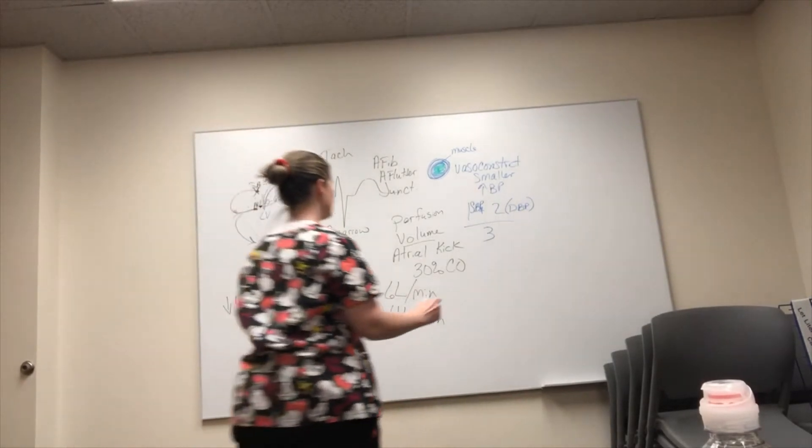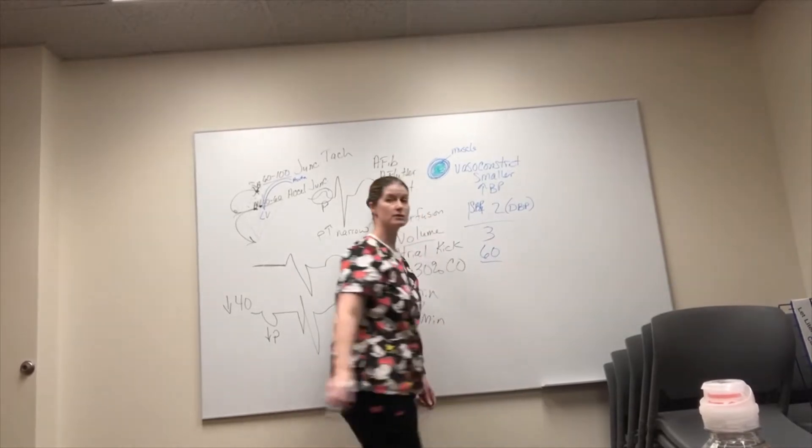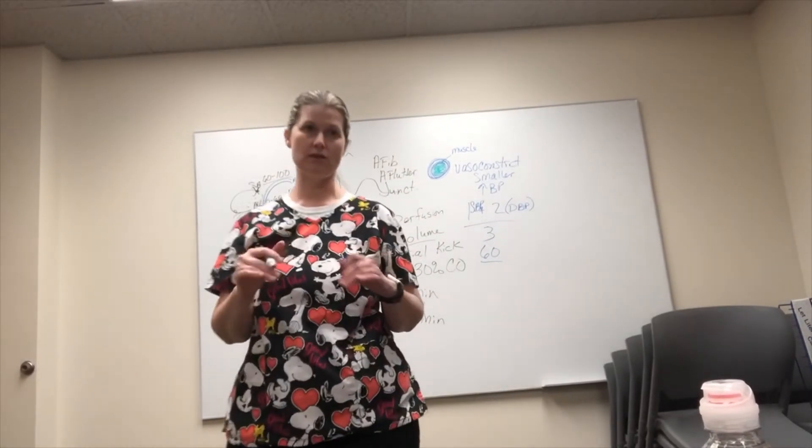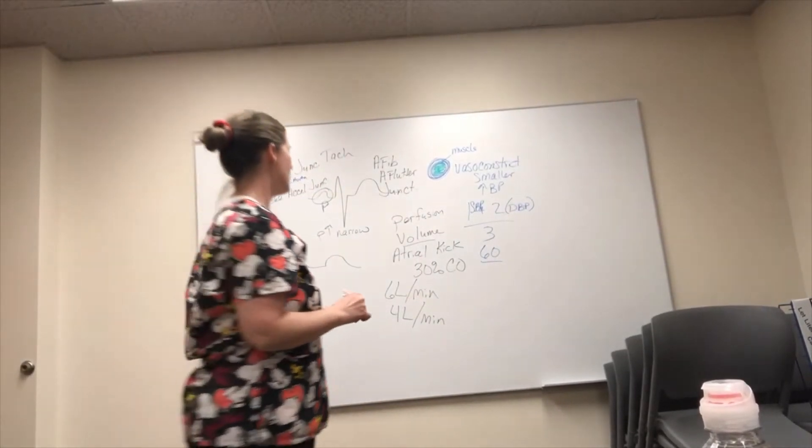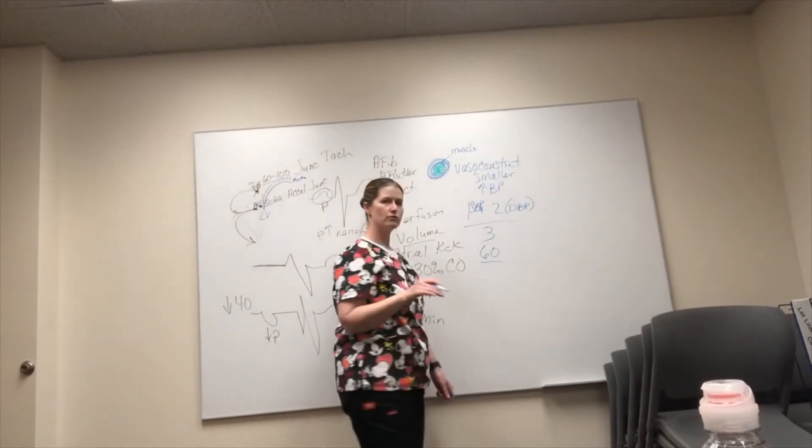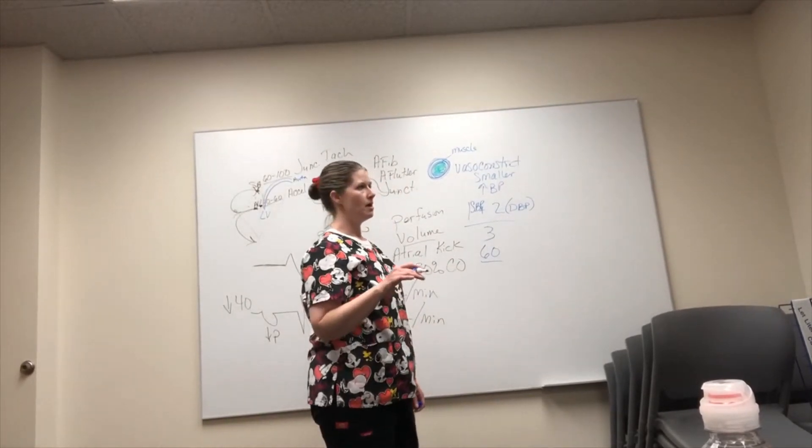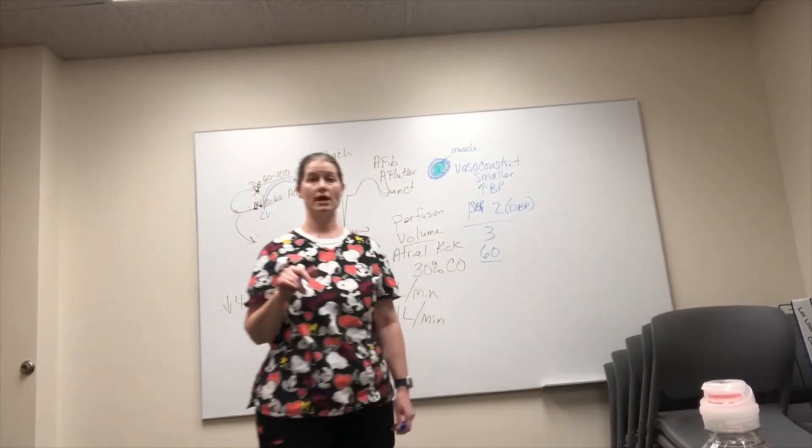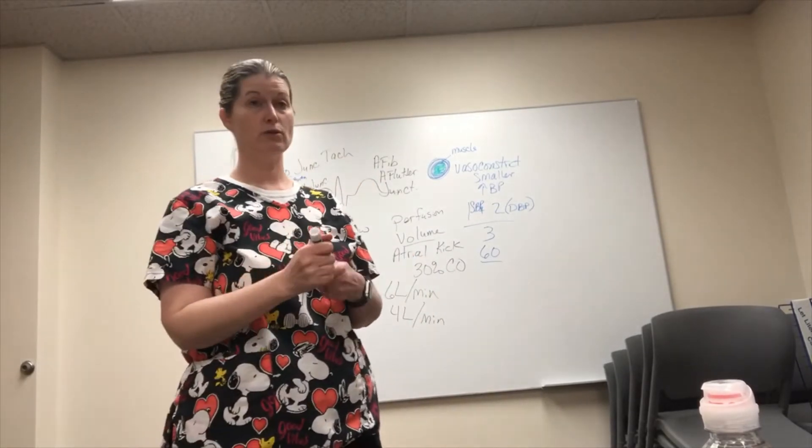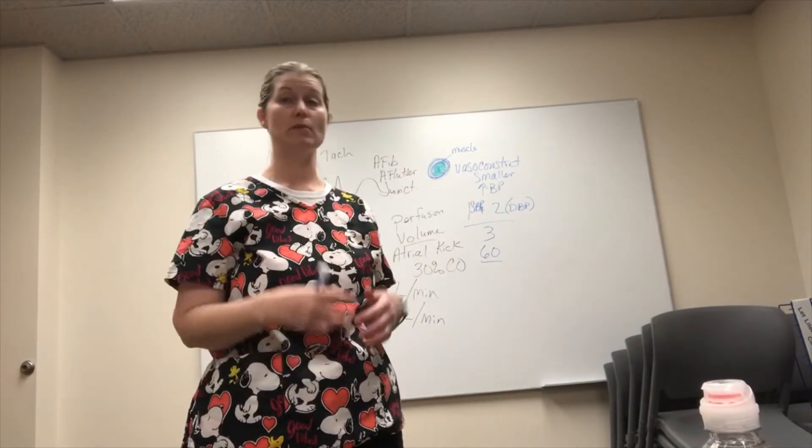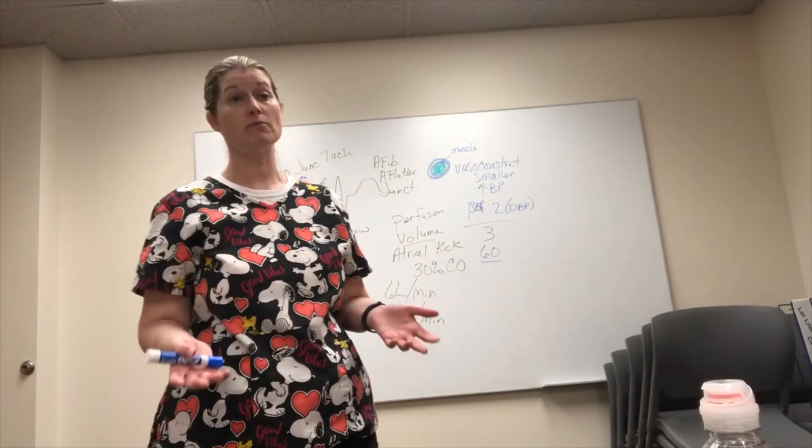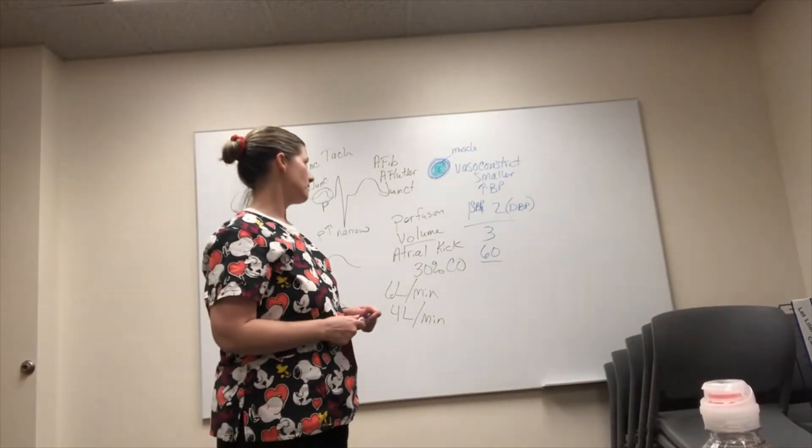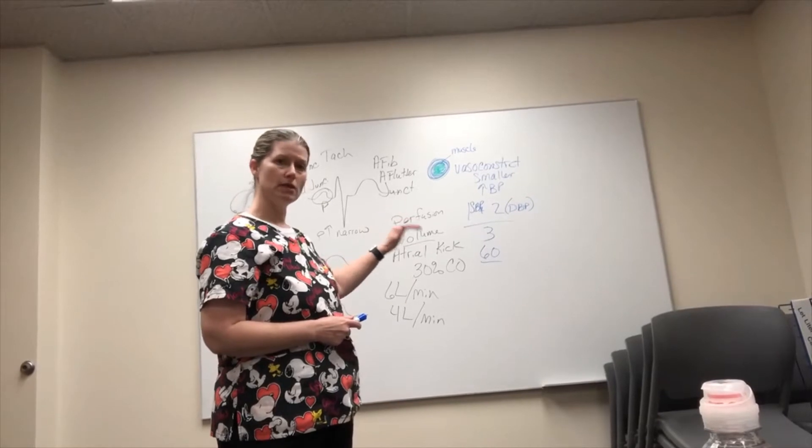You have to have a MAP of 60. Research is showing it's more like 70, but 60 is still the number that we use in order to perfuse all of your organs. It's really nice when you're in the ICU, when you have a Foley catheter and you're doing frequent blood pressures, maybe they have an arterial line or something. You can watch the mean arterial pressure.